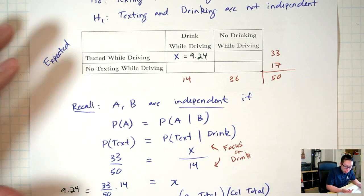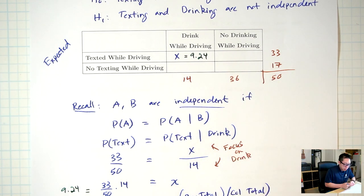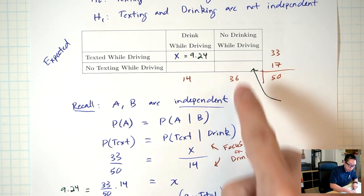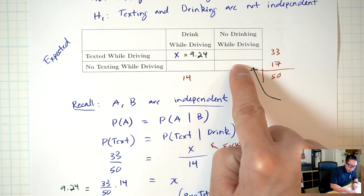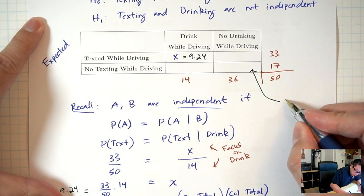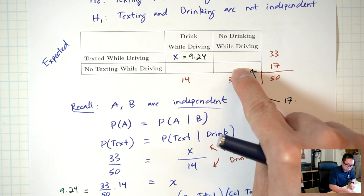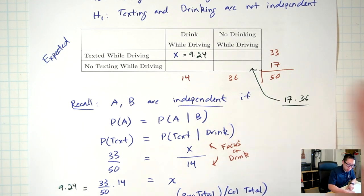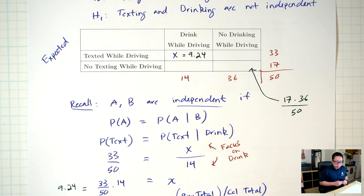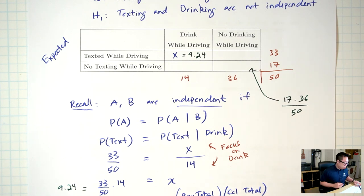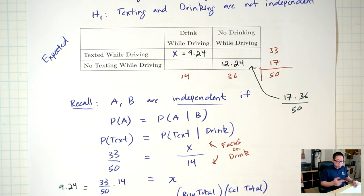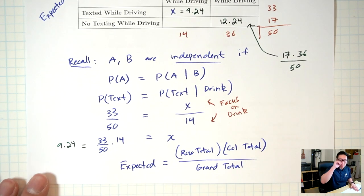Let's see how we fill in one of the other boxes — the bottom right box. To fill in that bottom right box, we use: row total 17 times column total 36, divided by grand total 50. 17 times 36 over 50 equals 12.24. And that's how you fill in the other boxes too. We'll do a full example where we go all the way through.